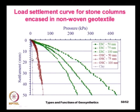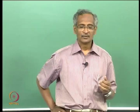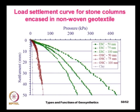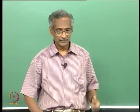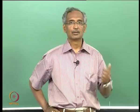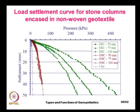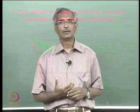The pressure-settlement data of soft clay shows a strength of about 3 to 5 kPa, as the soil was prepared at a consistency near the liquid limit. The soft clay fails at a very low pressure of 10 to 15 kPa. By inserting ordinary stone columns (OSC) of 50, 75, or 100 mm diameter, the pressure capacity increases to nearly 50 kPa.